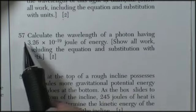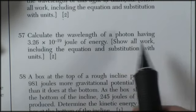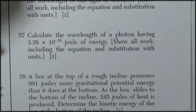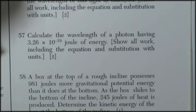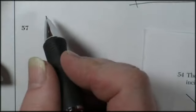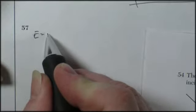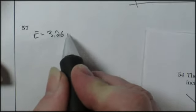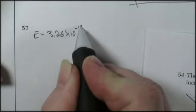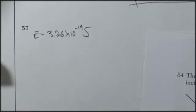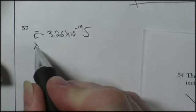Question 57. Calculate the wavelength of a photon having 3.62 times 10 to the negative 19 joules of energy. Show all your work, including the equation, substitution with units. I'm going to start with what I know. So I've got a photon that's got some energy, and energy is equal to 3.26 times 10 to the negative 19 joules. I want to know the wavelength of that thing.